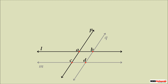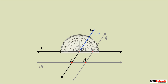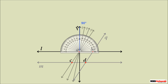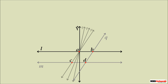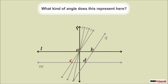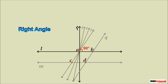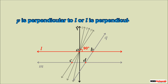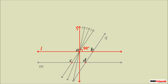Looking at lines p and l, if we measure the angle at point A it measures 60 degrees. But as we rotate this line, it makes different angles at every rotation. At a certain position it makes an angle of 90 degrees — a right angle. The lines are still intersecting, and since they intersect at a right angle, we say line p is perpendicular to l. Thus, if two lines intersect each other at a right angle, the lines are perpendicular to each other.